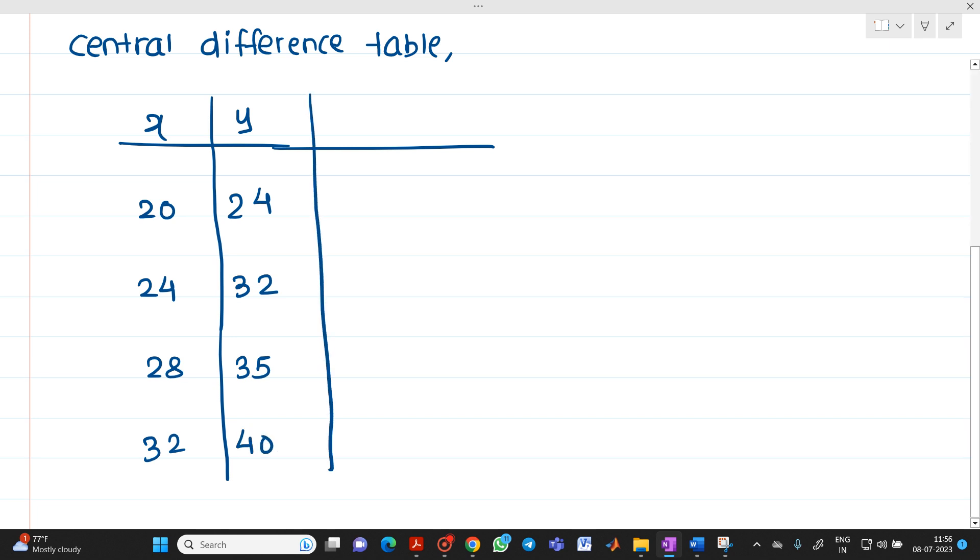So let me prepare the first values. How to find this out? It will be 32 - 24, so it comes out to be 8. 35 - 32, it will be 3. 40 - 35, it will be 5.